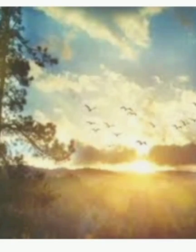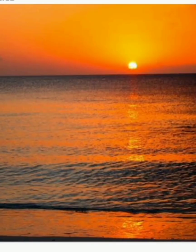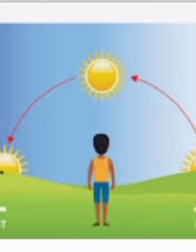The day begins with sunrise and the night begins with sunset. Where does the sun rise and set? The sun rises in the east and sets in the west.